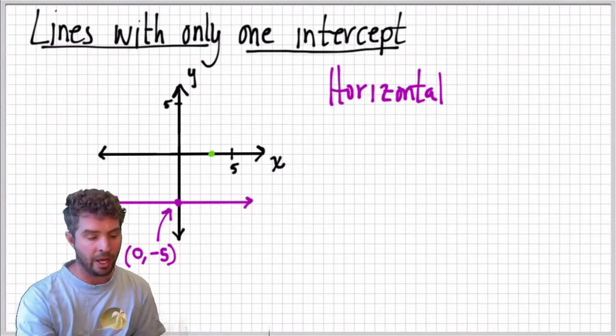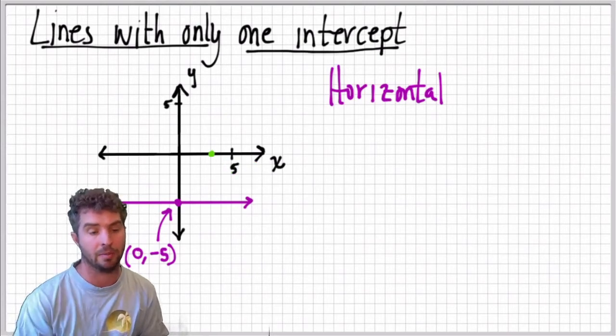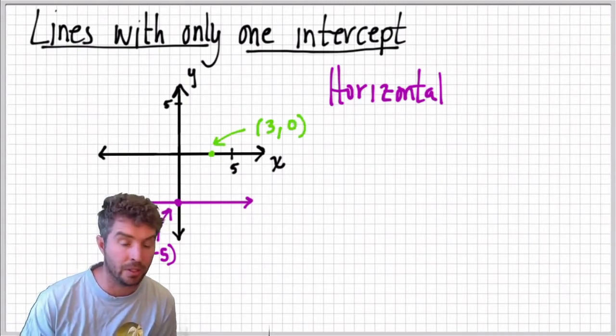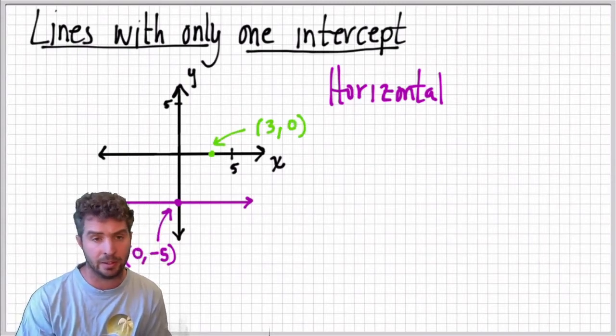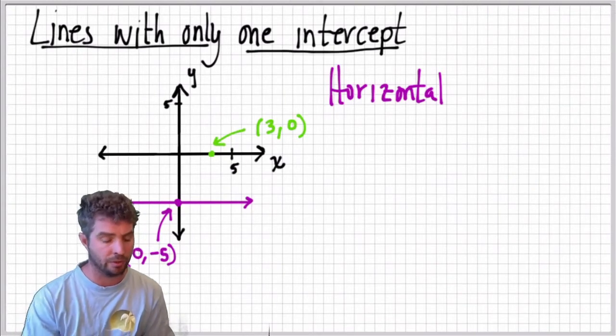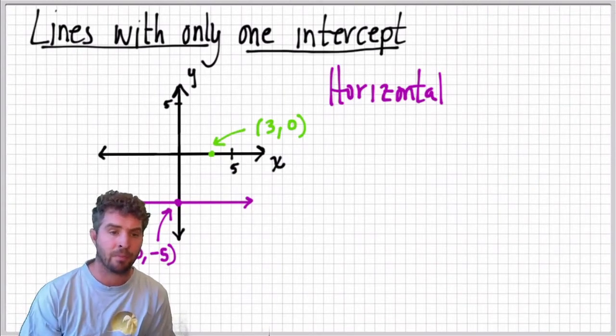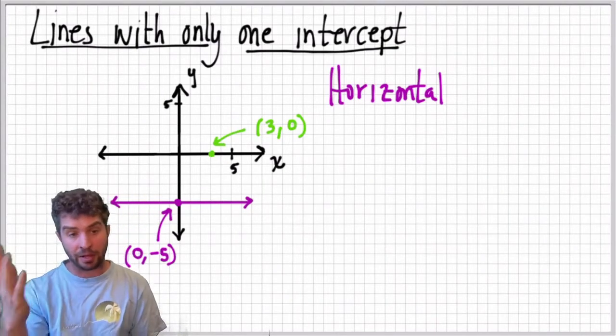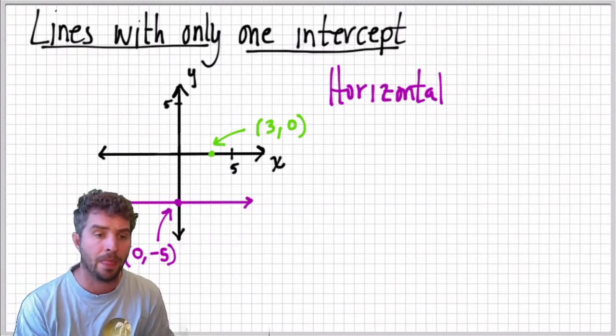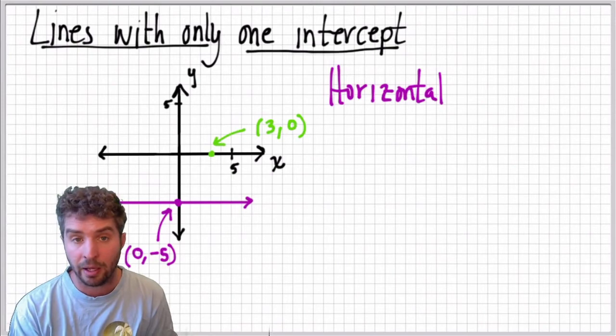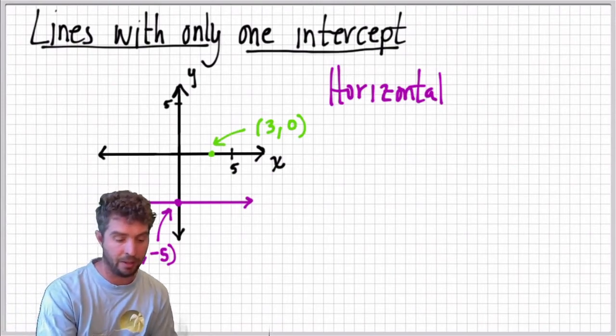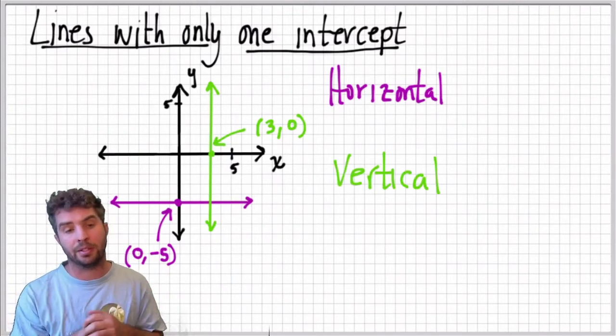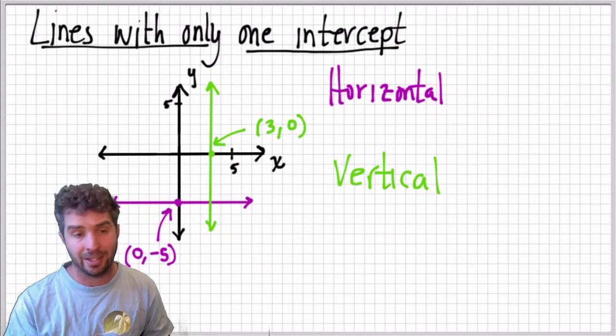Likewise, we could have a line with just an x-intercept. And so this coordinate, the coordinates of that point that I've drawn are going to be 3, 0. It could be anywhere on the x-axis, but I've just chosen 3, 0. And just like I chose 0, negative 5 down here. But this point, if it's only got an x, this line that's going to go through the 3, 0, if it's going to not have a y-intercept, then it has to be parallel to the y-axis, so it has to be vertical. So horizontal and vertical lines are these special lines where there are only one intercept.